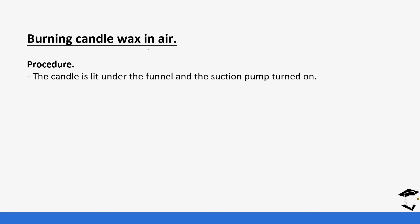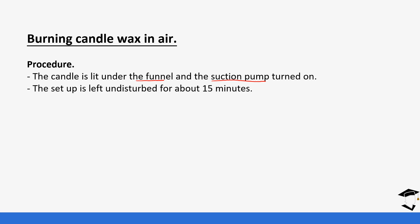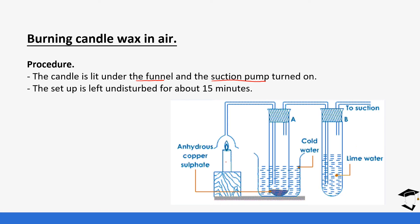The procedure for the burning candle in air experiment: first, the candle was lit under the filter funnel, then the suction pump was turned on. The setup was left undisturbed for 15 minutes. The candle burns under the filter funnel, which leads to test tube A containing anhydrous copper 2 sulfate, dipped in a beaker of cold water. Another tube leads to test tube B, which contains lime water, and the suction pump is connected at the end.